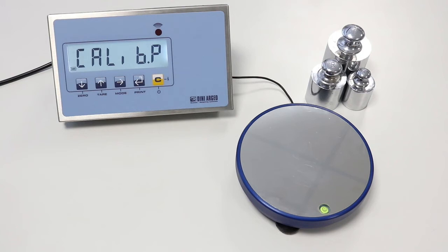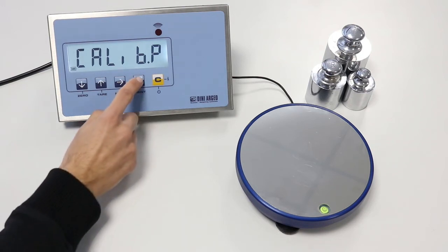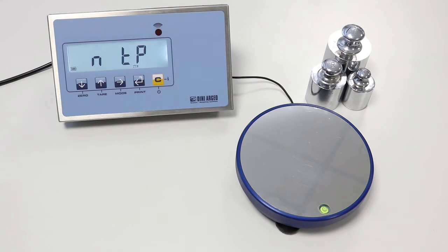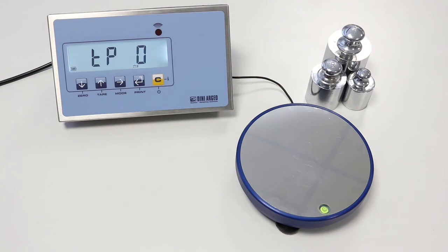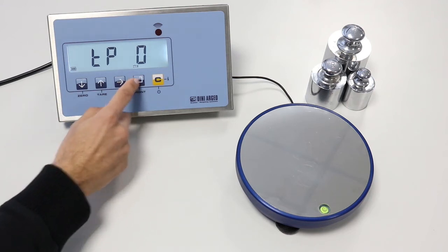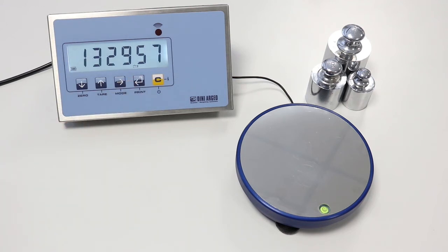Now we enter the CALIPP step and start the calibration procedure. NTP is the number of calibration points. We can calibrate the scale using up to 3 different points other than the zero point. In our example, we will use 2 calibration points. TP0 is the calibration of the zero point. You have to unload the scale and press PRINT to acquire. The message OK appears and the acoustic beep confirms the acquisition.